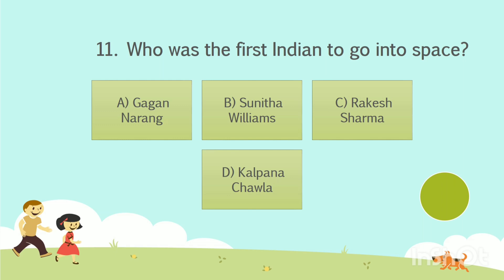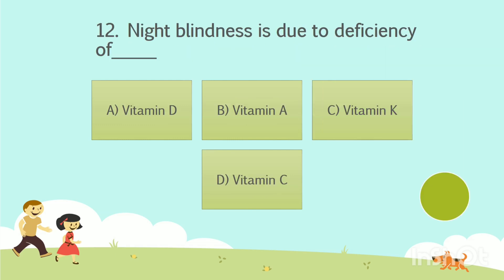Who was the first Indian to go into space? Option A: Gagan Narang. Option B: Sunita Williams. Option C: Rakesh Sharma. Option D: Kalpana Chawla. Your time starts now. The answer is Option C, Rakesh Sharma.